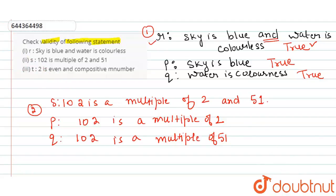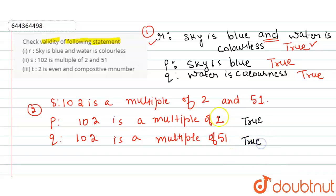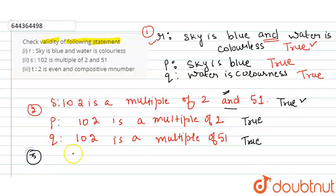Checking validity: 102 divided by 2 gives remainder 0, so P is true. 102 divided by 51 also gives remainder 0, so Q is also true. Since both components of the compound statement are true and connected by 'and', the whole statement S is also true. Therefore statement S is valid.